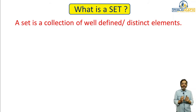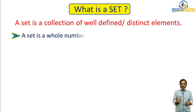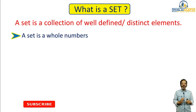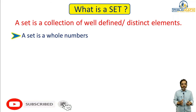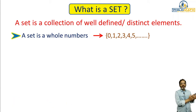From this, what we understand is: a set is nothing but a collection of well-defined or distinct elements. Let me give you a few more examples so the concept is cleared properly. The first is a set of whole numbers. We all know whole numbers are numbers starting from zero going on infinitely: 0, 1, 2, 3, 4, and so on.